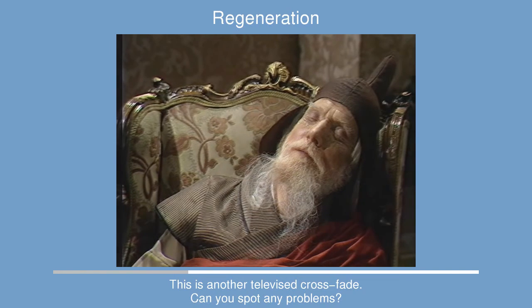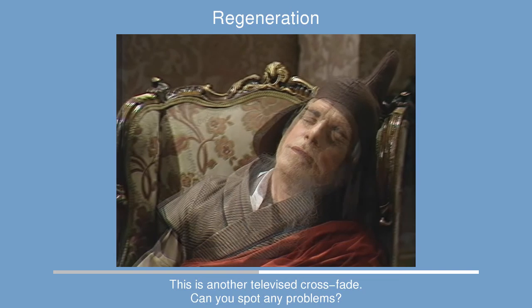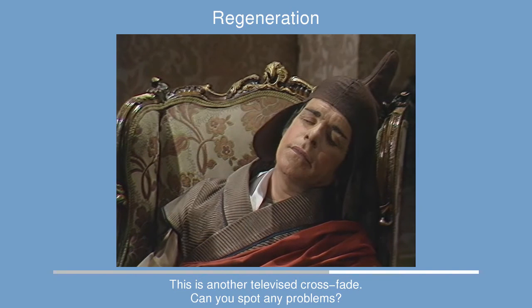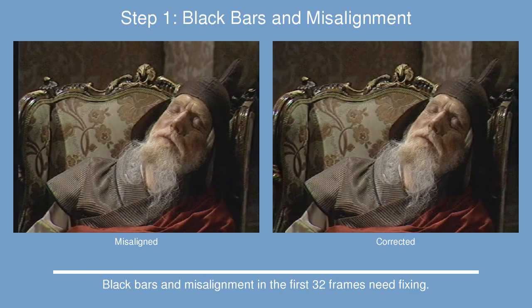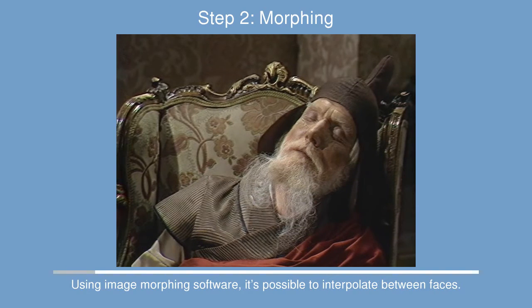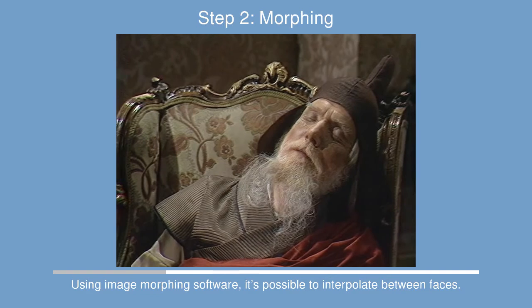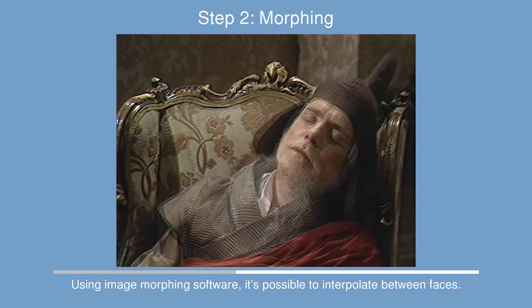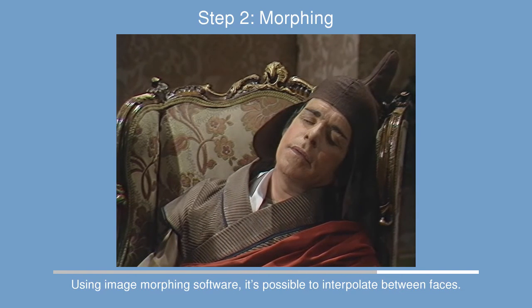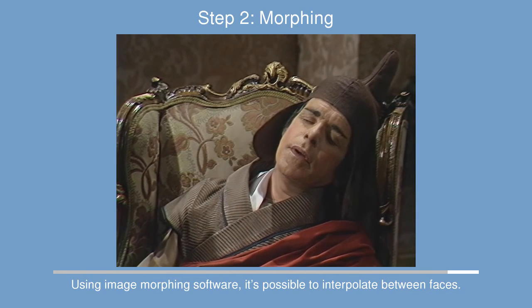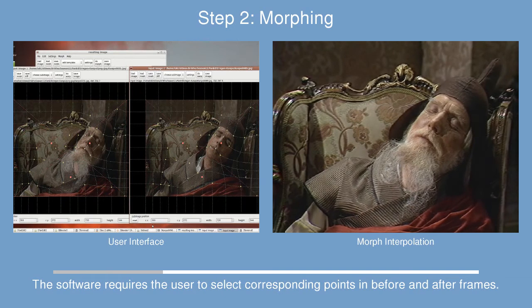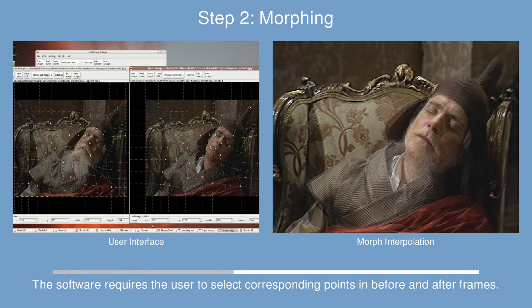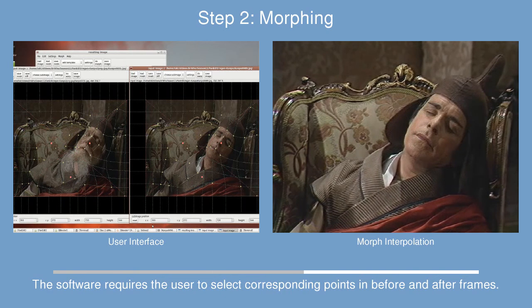Here we have the first regeneration shown in colour. Kampo Rinpoche is regenerating into Cho Ji, and this occurs just before the Doctor regenerates from Jon Pertwee into Tom Baker. DTK Morph was used to morph between the faces, with corresponding points selected on each face via its user interface.